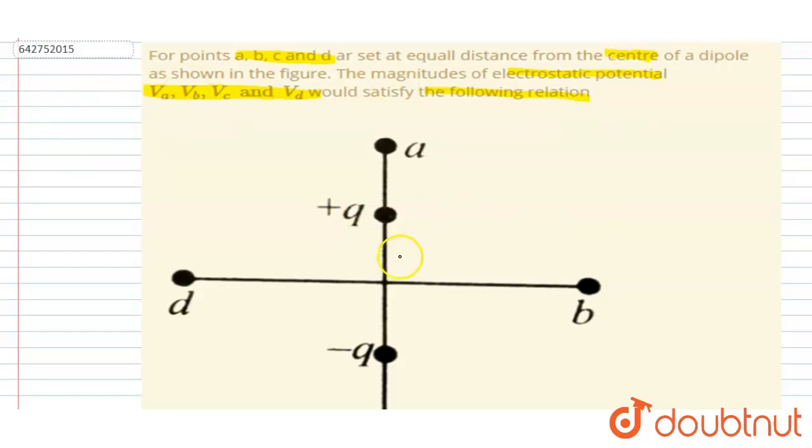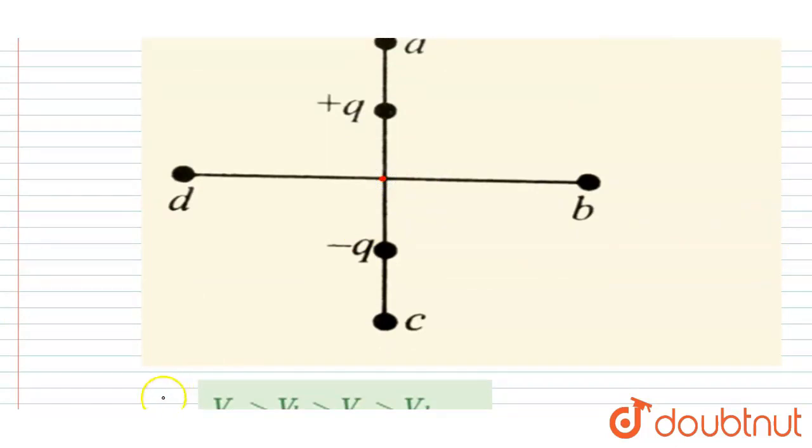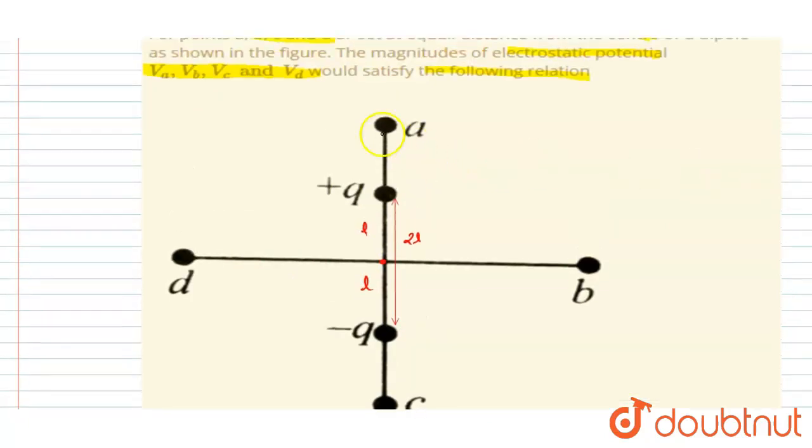And let's say this distance is 2l, so this distance will be l and l, right? So now you can see the point a is at a distance of d from the center.